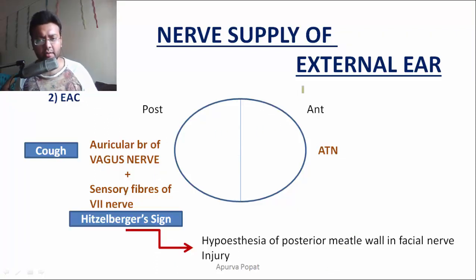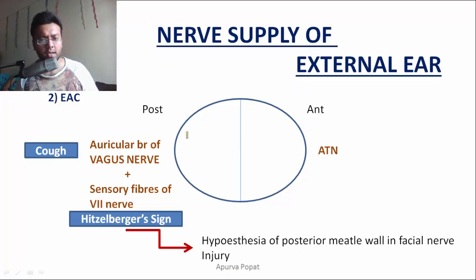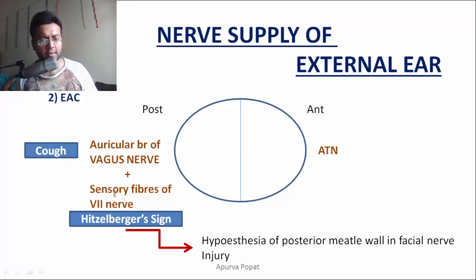Similarly, the anterior side of the external auditory canal is supplied by the auriculotemporal nerve, and the posterior side of the external auditory canal is supplied by the auricular branch of the vagus nerve and the sensory fibers of the seventh nerve.